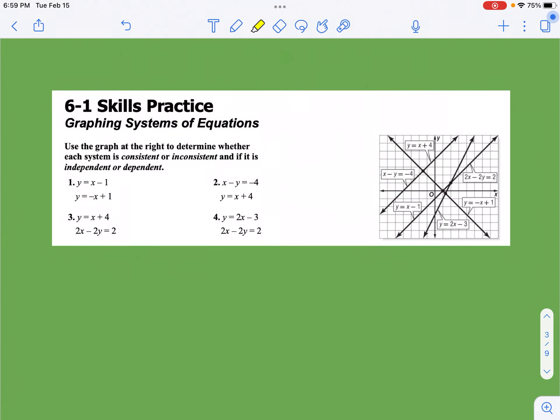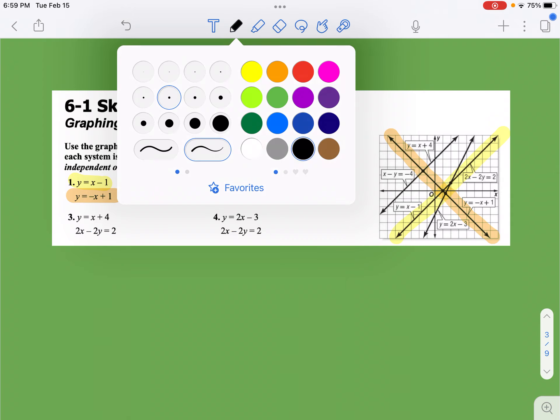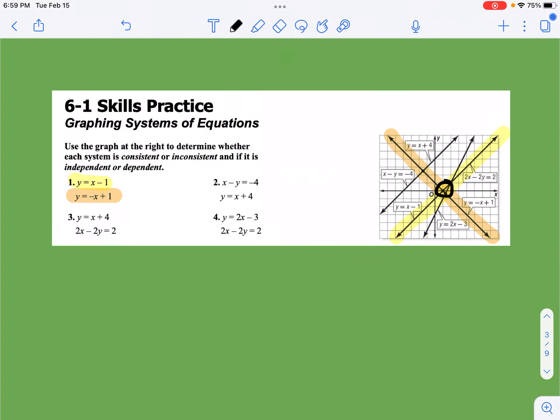So we have y equals x minus 1. If I find that, that's this line right here. And then the next one is y equals negative x plus 1, and that is this line right here. If you look at those, they meet in exactly one place. They meet right here at that point, the upper point right there. So when it asks, what is this? Number one would be consistent because there is a solution, and it would be independent because there's one solution. So it's consistent and independent.